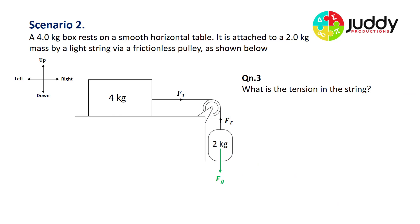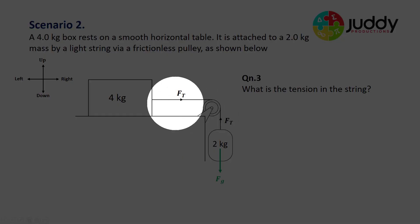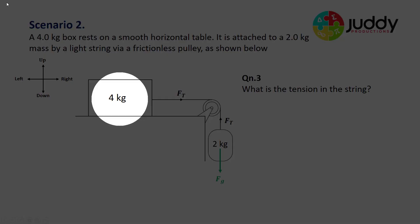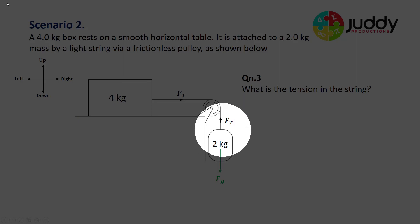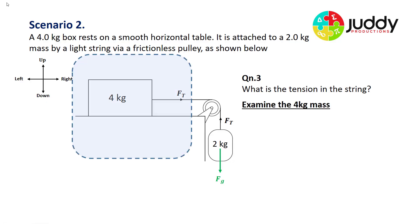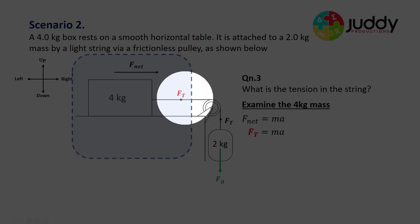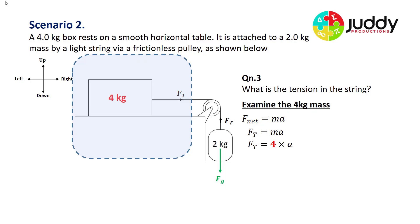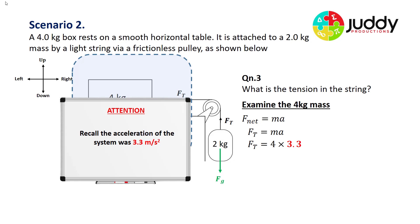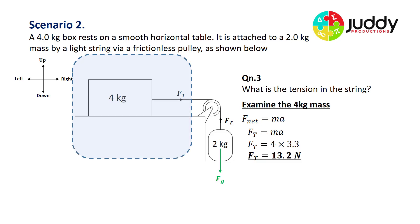Finally, we want to calculate the tension in the string. The tension operates between the two objects, so we can't analyze the entire system in one go. We need to consider either the four kilogram box or the two kilogram mass to work out the tension. I'm going to choose the four kilogram box. We know the net force equals ma and it's generated by the tension. So the force of tension equals mass times acceleration of the four kilogram box: four times 3.3 meters per second per second. Multiplying these terms together, we find the force of tension to be 13.2 newtons.